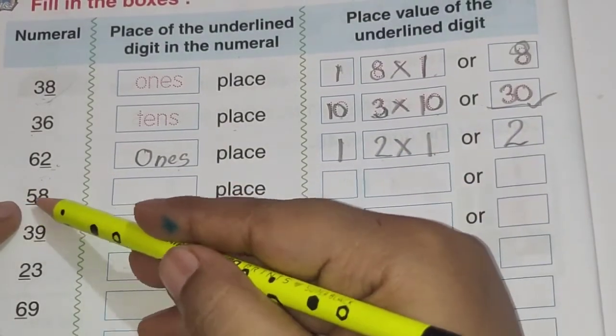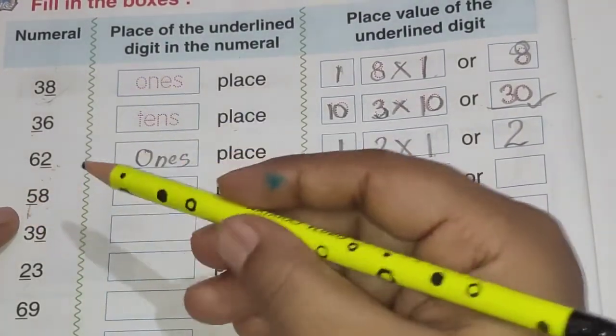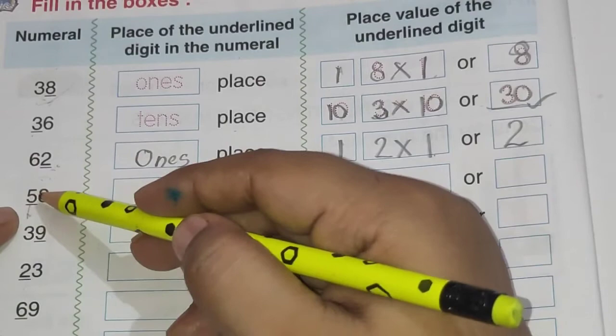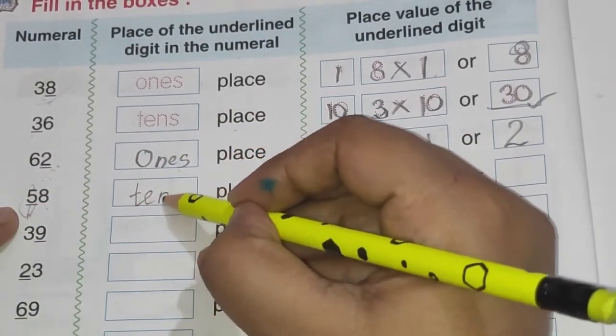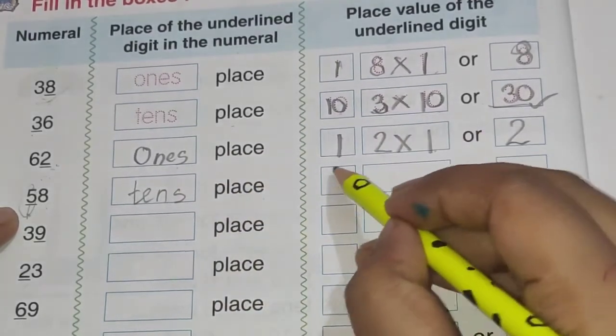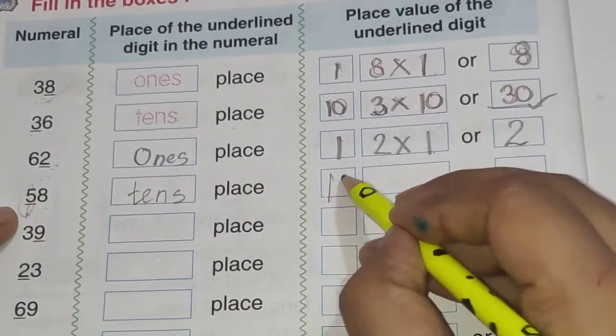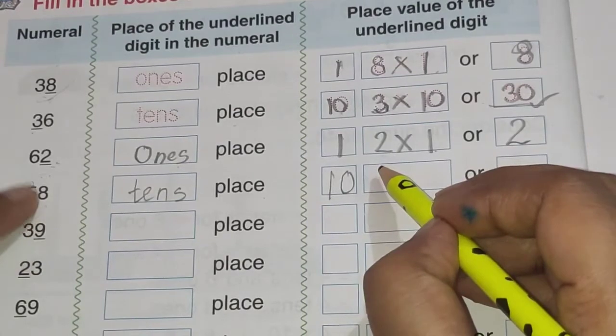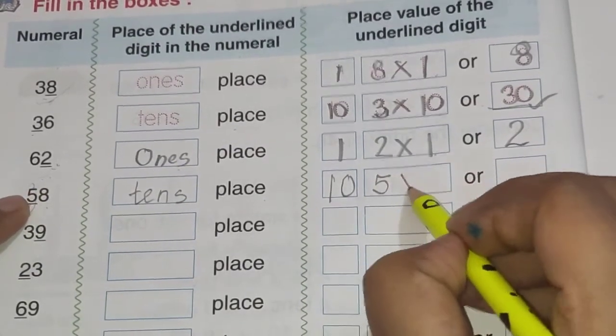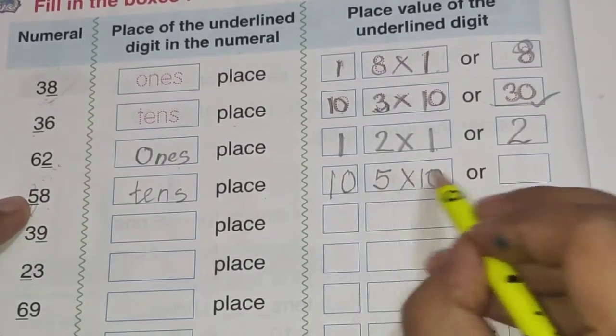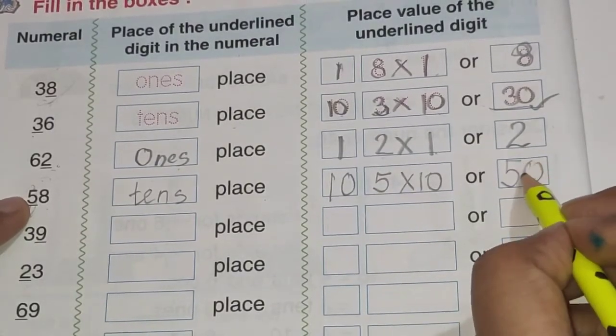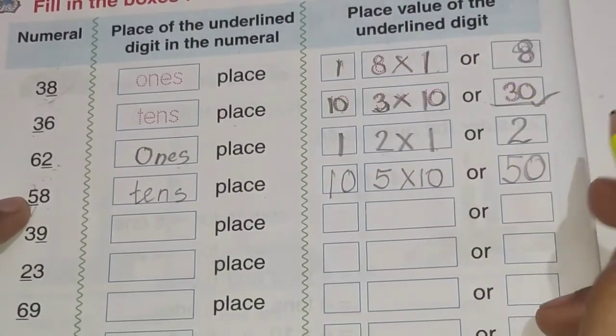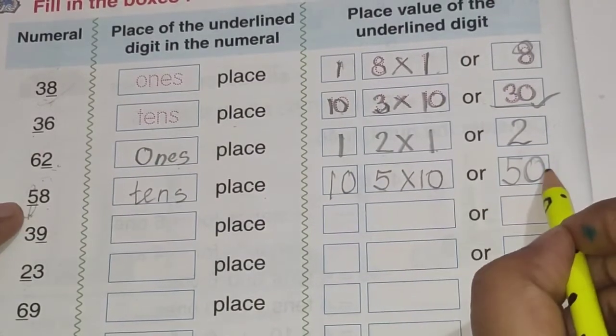Then this is 58. Yaha par 5 underlined hai. 5 is on which place? This one is 1 and this one is tens. 5 is on tens place. T, E, N, S. Tens place. Tens place ki value hoti hai 10. Now this number is 5. So 5 into 10. And 5 tens are 50. Simply 5 me 0 add ho ga na. Jo maine aapko bhi bataya tha upar. So it is 5 tens are 50.